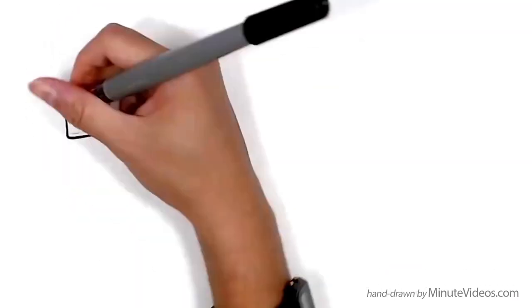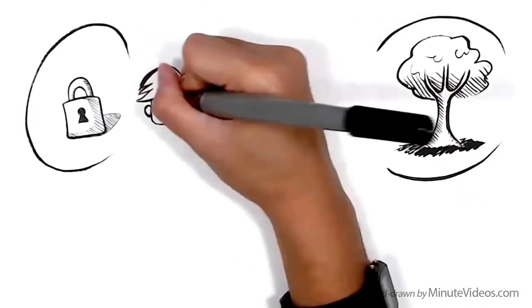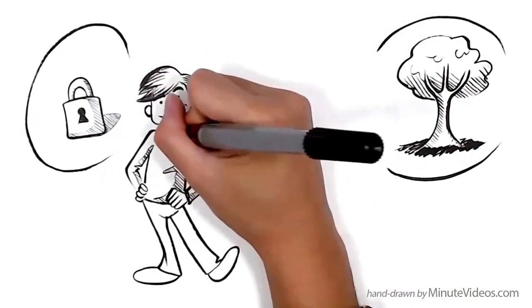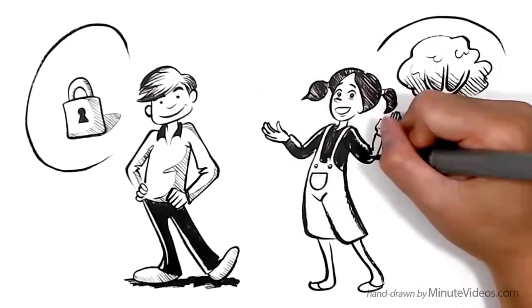To illustrate the difference in everyday life, let's observe two imaginary kids. Jay thinks you've either got it or you haven't. Ann knows that she can learn anything if she wants it enough.